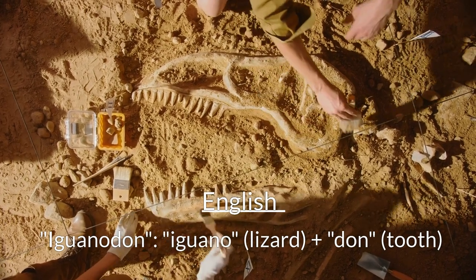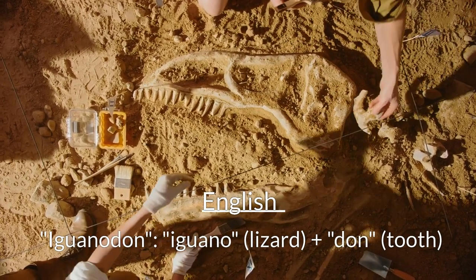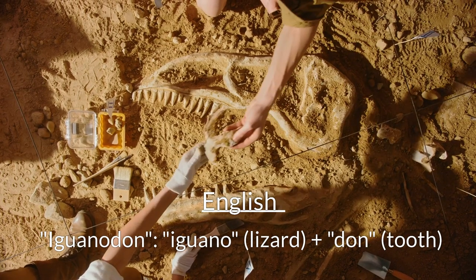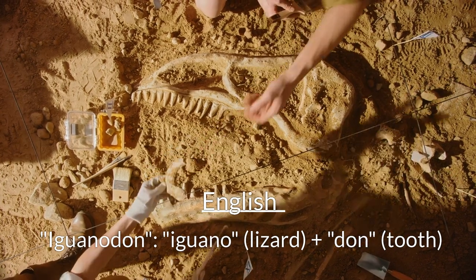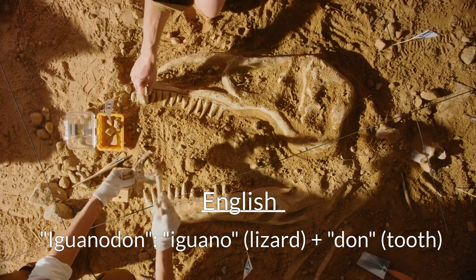Iguanodon was derived from the Greek roots iguano, meaning iguana — a type of lizard — and don, from the Greek word for tooth.